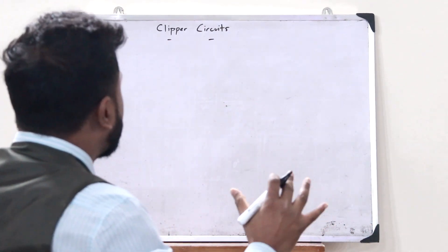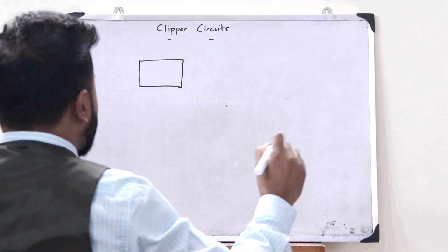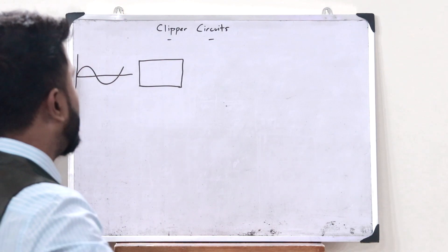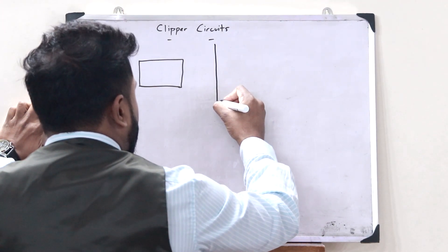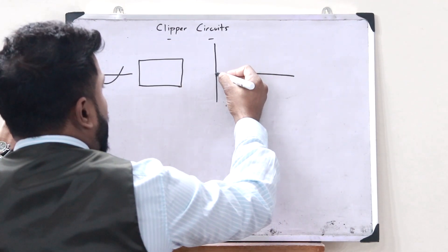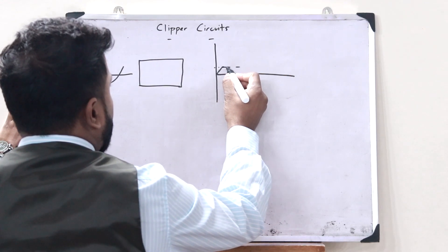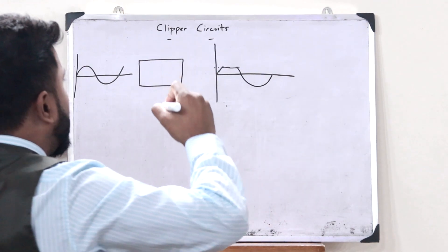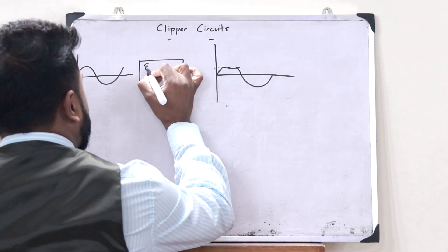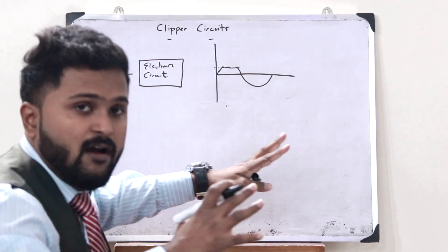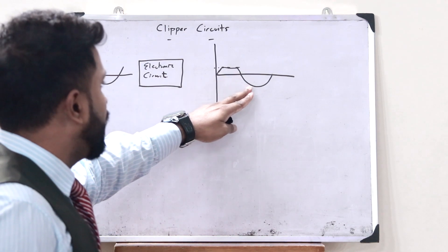Let us ask ourselves the obvious question: what do you actually mean by the term clipper circuits? A clipper circuit is basically an electronic circuit in which, when we give an input waveform — let's say a sine waveform like this — we can control this waveform in such a way that it does not exceed a particular limit. At this particular limit, we can clip off the waveform and get the output somewhat like this.